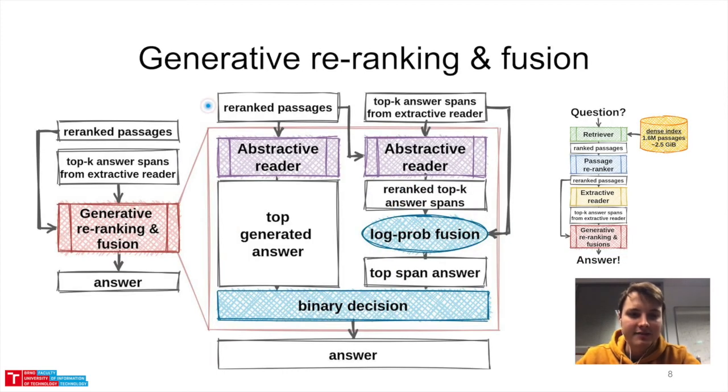Having re-ranked passages, we generate an answer via Fusion in Decoder and we also use the same model to re-rank top-k answer spans for extractive reader. Finally, we use two fusions to produce an answer prediction. Firstly, we combine log probabilities for top-k spans provided by two readers via simple linear combination. At last, the binary decision is made between the generated answer and the top extracted answer according to their log probabilities.